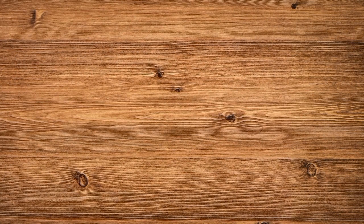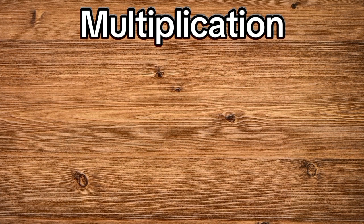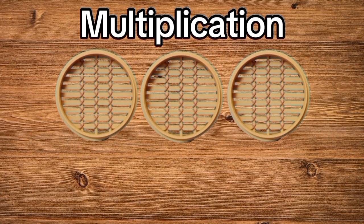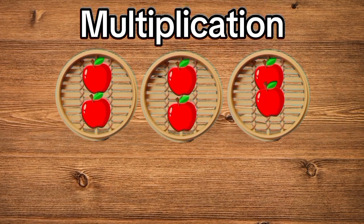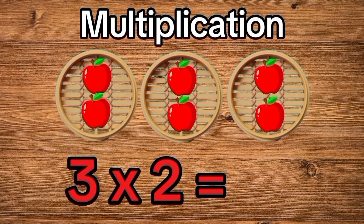Now let's move on with multiplication. What is multiplication? Multiplication is when we add the same number many times. Imagine we have three baskets and each has two apples. That's three times two. Let's count them: one, two, three, four, five, six. We have six apples.